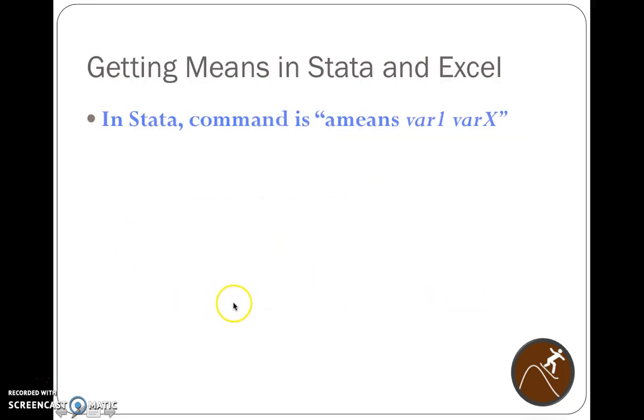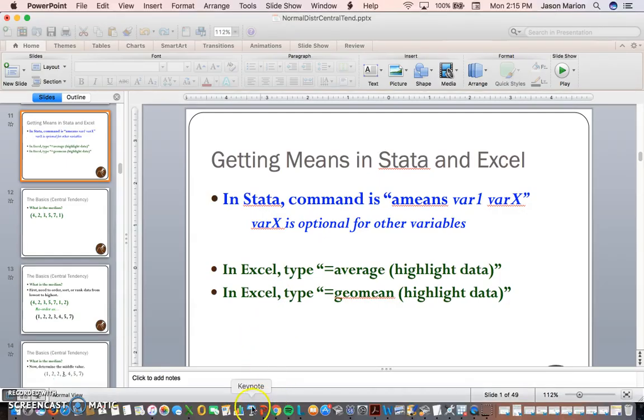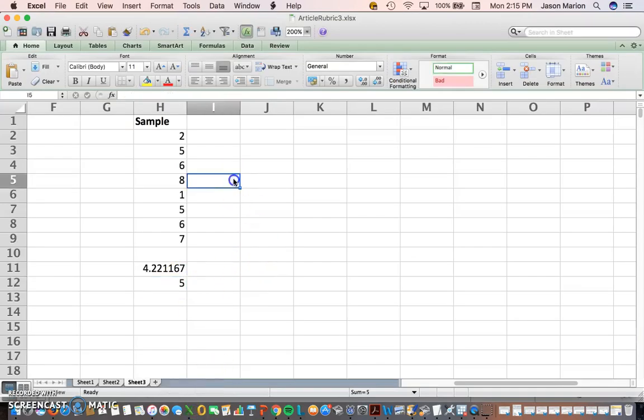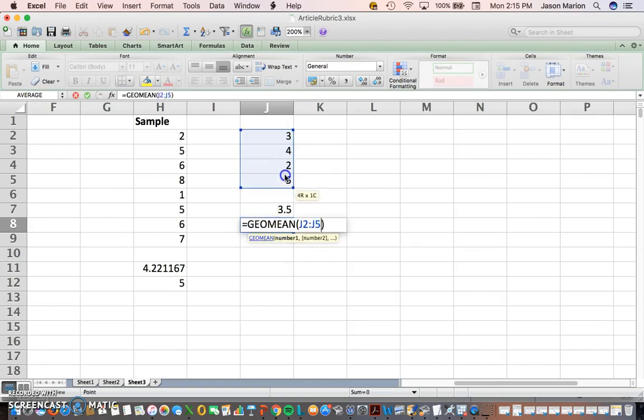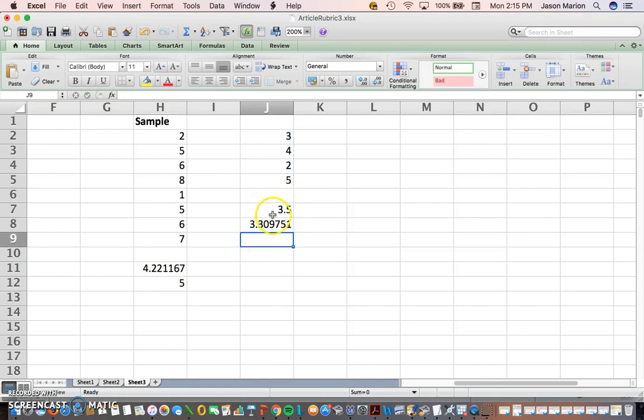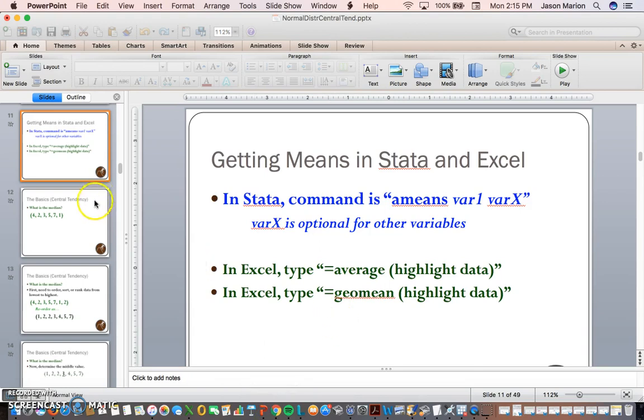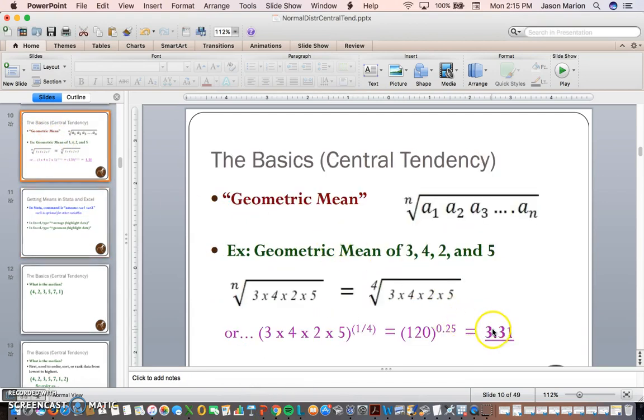So if we're interested in the median or the average for what we just did - 3, 4, 2, and 5 - in Excel. Sample: 3, 4, 2, and 5. If we want the actual average of 3, 4, 2, and 5, pretty easy. J2 to J5. We want the geometric mean: GEOMEAN, 3, 4, 2, and 5. Easy enough. Now notice there is a difference between these. So 3.31 is what we got. What did we have in the actual PowerPoint earlier for those? 3.31. Easy enough.